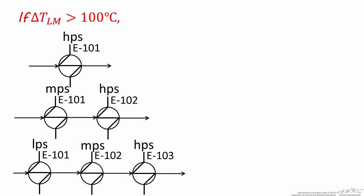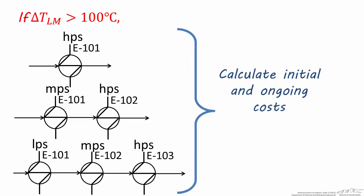However, one of the issues we're faced with is how do you know which option is the best? The only way to know if you should use one heat exchanger that can accommodate a large log mean temperature difference, or if you should use two or more cheaper heat exchangers in series, is to calculate the initial and ongoing costs of each scenario and compare the lifetime cost of operating each of them. As was mentioned in Lecture 30, the ongoing costs of running a heat exchanger usually outweigh the initial costs, but not always. So if you can save some money by using smaller, cheaper utility heat exchangers instead of using high pressure steam exclusively, you should consider doing so.